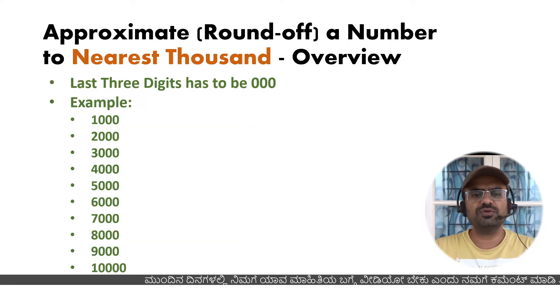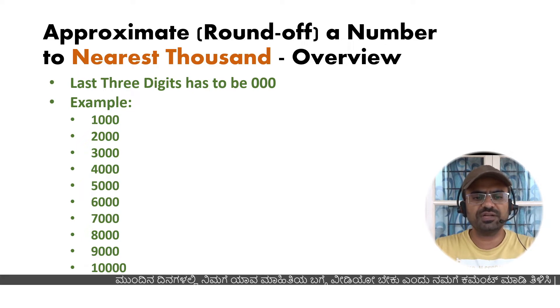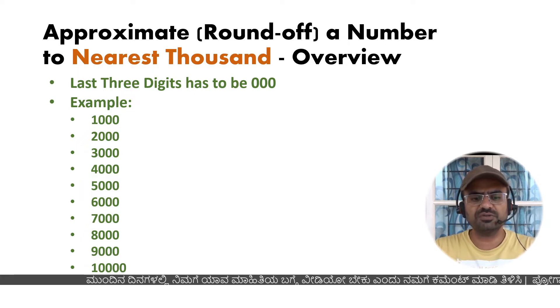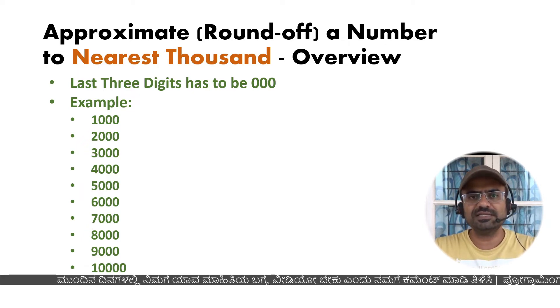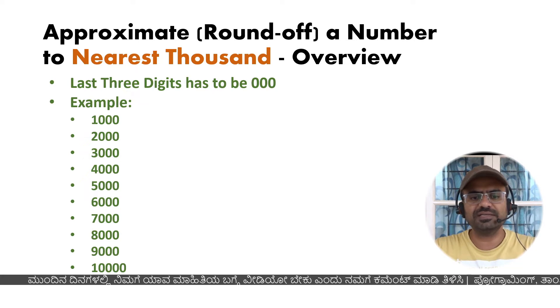If you look at rounding a given number to the nearest thousand, the last three digits of the rounded number have to be zeros.